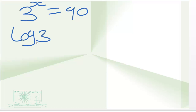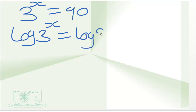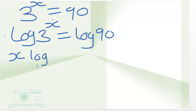So we have log of 3 exponent x is equal to log of 90. Next, we apply the power rule of logarithm, so x multiplies log 3, and this is equal to log 90.